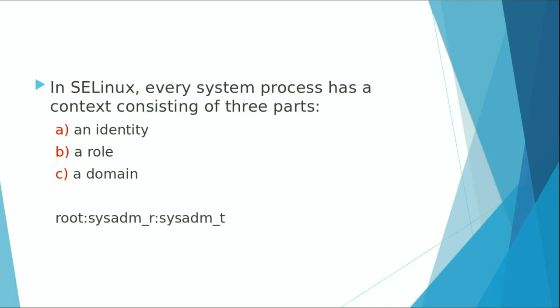In SELinux, every process has a context, and the context basically consists of three parts: number one is identity, number two is role, and number three is domain. The identity is the name of the user account. You can also call the user account as system_u for system processes, or if you have no defined policies, you can call it user_u. In both cases, they represent the identity.